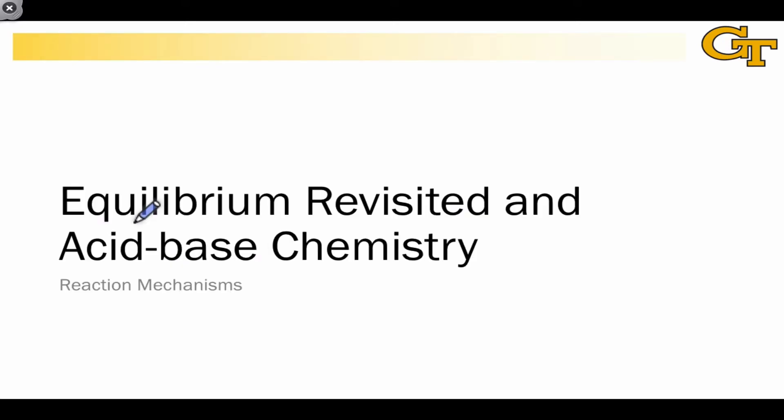To begin thinking about reaction mechanisms, we're going to start in a relatively simple context, that of acid-base chemistry. Acid-base chemistry is a relatively simple context to start in for two reasons. The first is that electron flows involved are relatively straightforward, and so there isn't a lot of complicated thinking we need to do about how electrons move in these reactions.